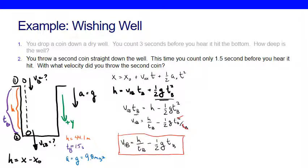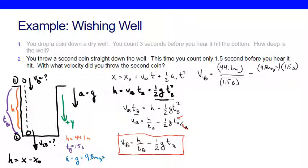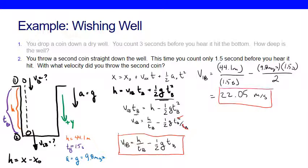Now I can plug in my numbers. My height, which we found before, is 44.1 meters divided by my time of 1.5 seconds, minus the correction factor: G = 9.8 m/s² times 1.5 seconds, all divided by 2. That works out to be 22.05 meters per second. So I threw this coin with a speed of 22.05 meters per second down a well with a depth of 44.1 meters.